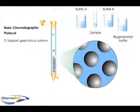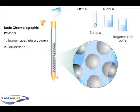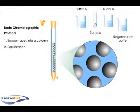The support is equilibrated with a buffer, which is generally identical to the buffer in which the sample was dissolved, and the sample is applied to the column.